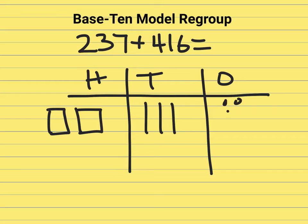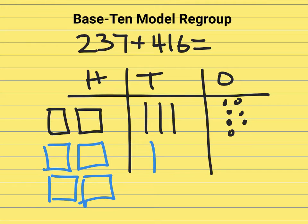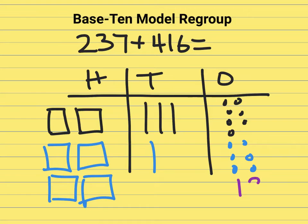1, 2, 3, 4, 5, 6, 7. Then I'll draw out 416. There's 200, 300, 400. There's the 10. 1, 2, 3, 4, 5, 6. So now what I need to do is add the numbers in the ones place. So it's 7 and 6. That's 13.